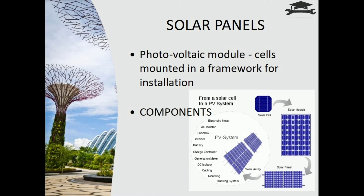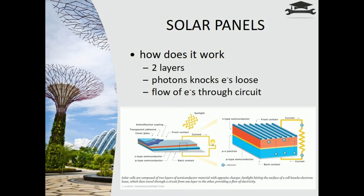Moving into solar panels — or more technically, a photovoltaic system — it is an arrangement of arrays of parallelly stacked solar modules, which are further an arrangement of solar cells and associated components such as tracking systems, mountings, batteries, or inverters. A photovoltaic cell or PV cell is a system that converts light energy into electricity by employing the principle that when a photon hits the plate, it knocks some electrons loose.